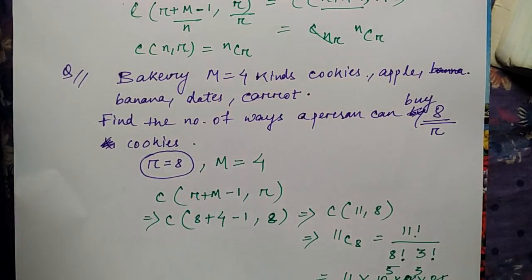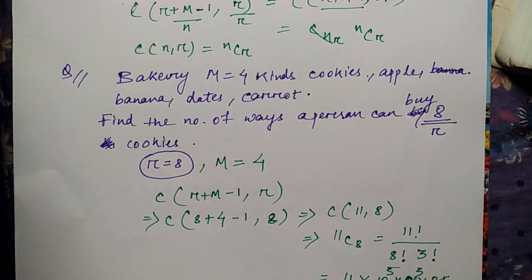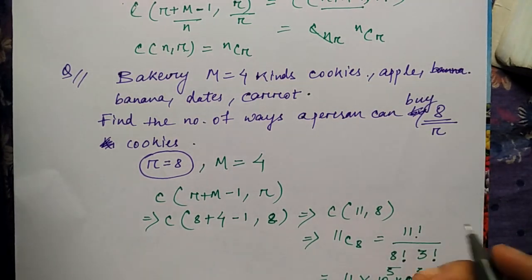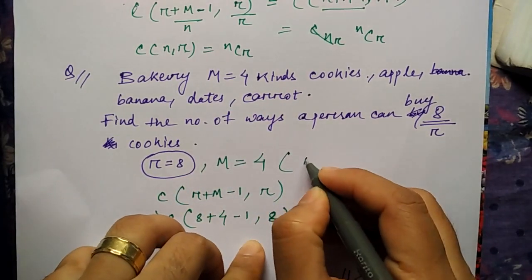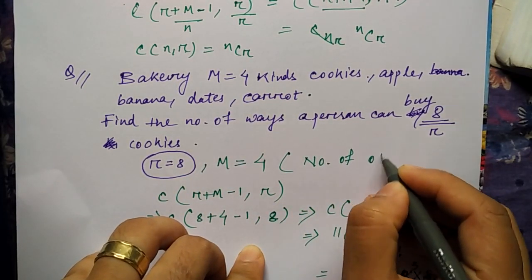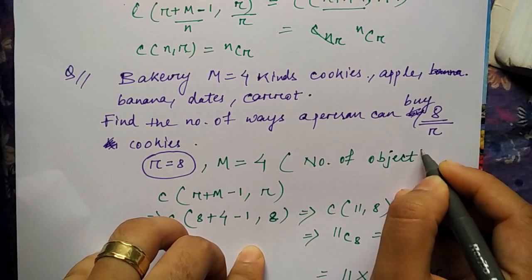So wherever you find this kind of repetition, you have to use the formula. And remember that always m value will be given in the question - you need not worry for that. It will be given, or if it is not given, it will always be the number of objects.